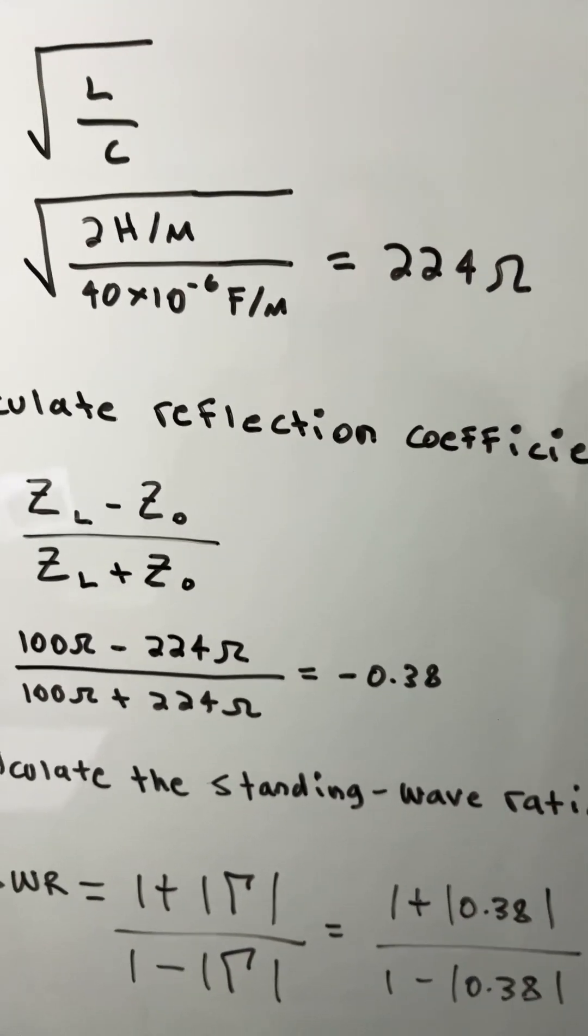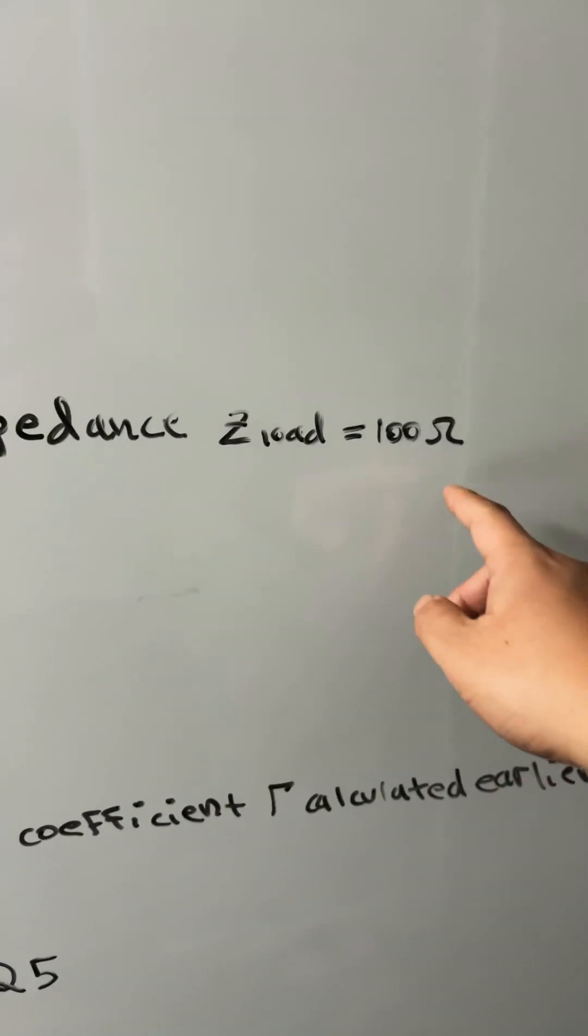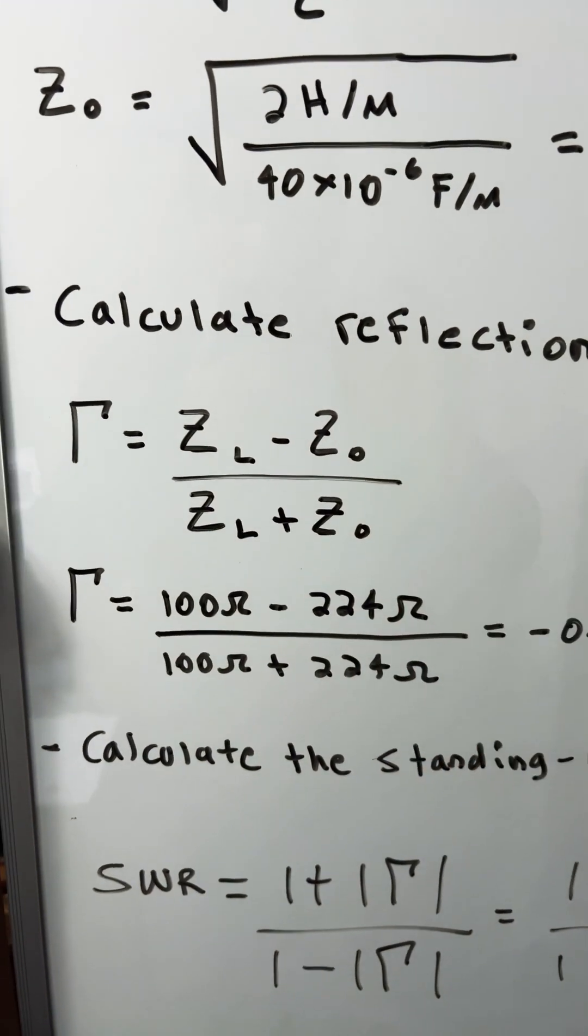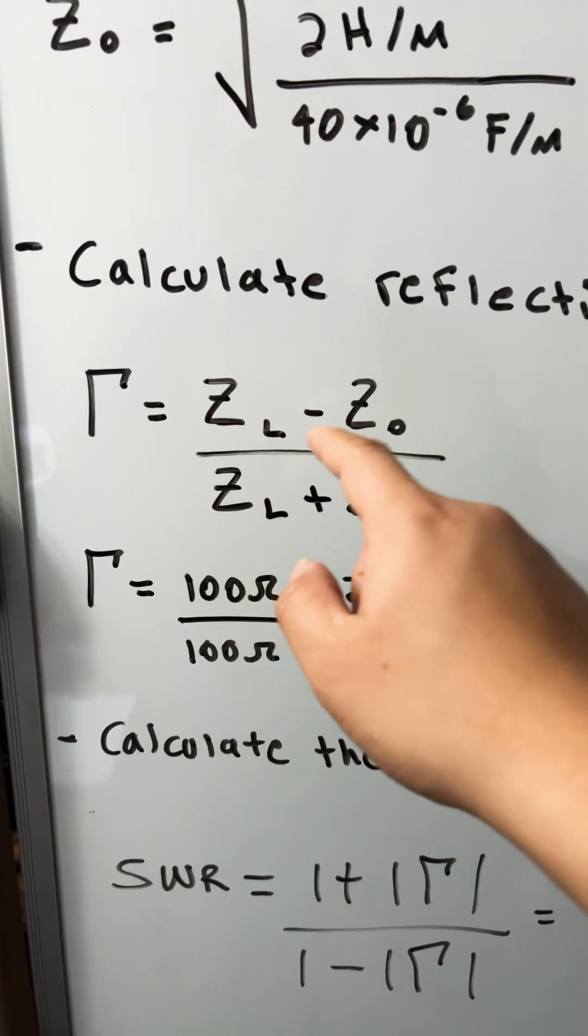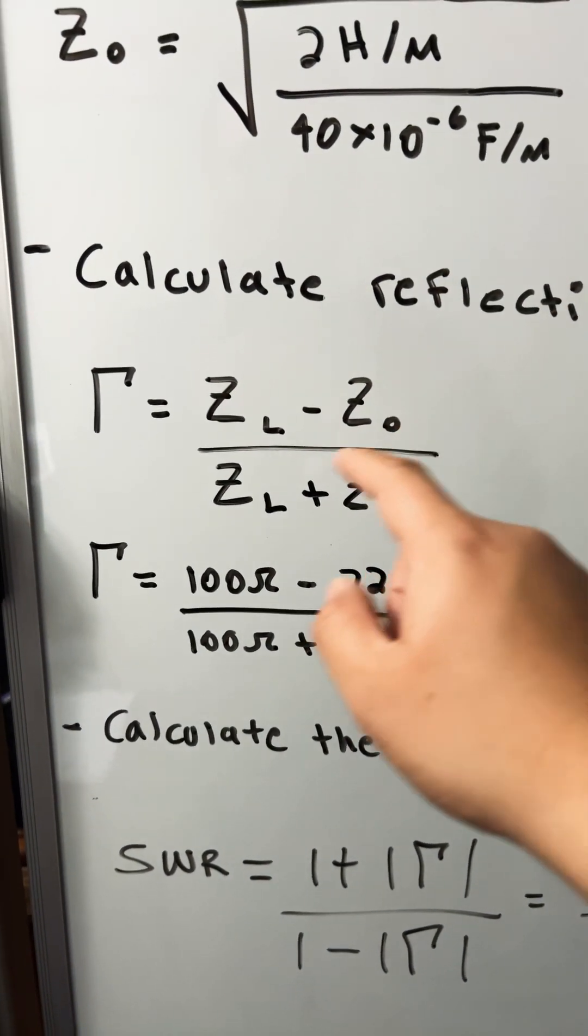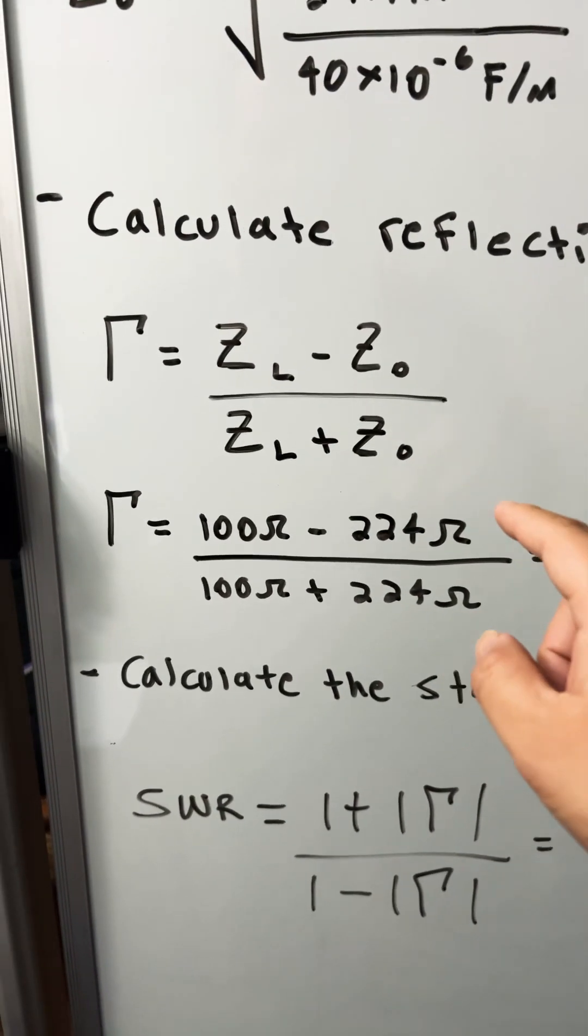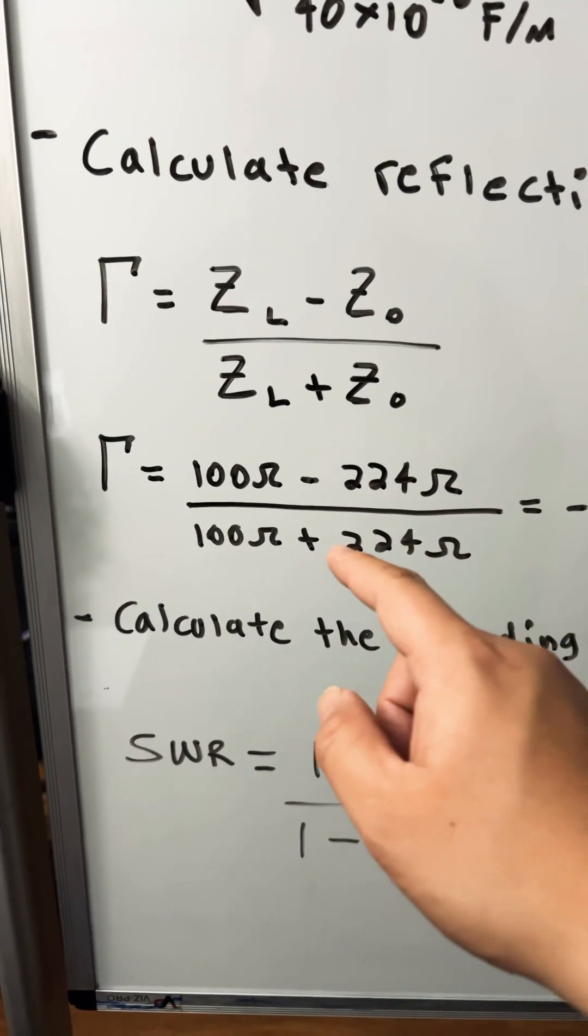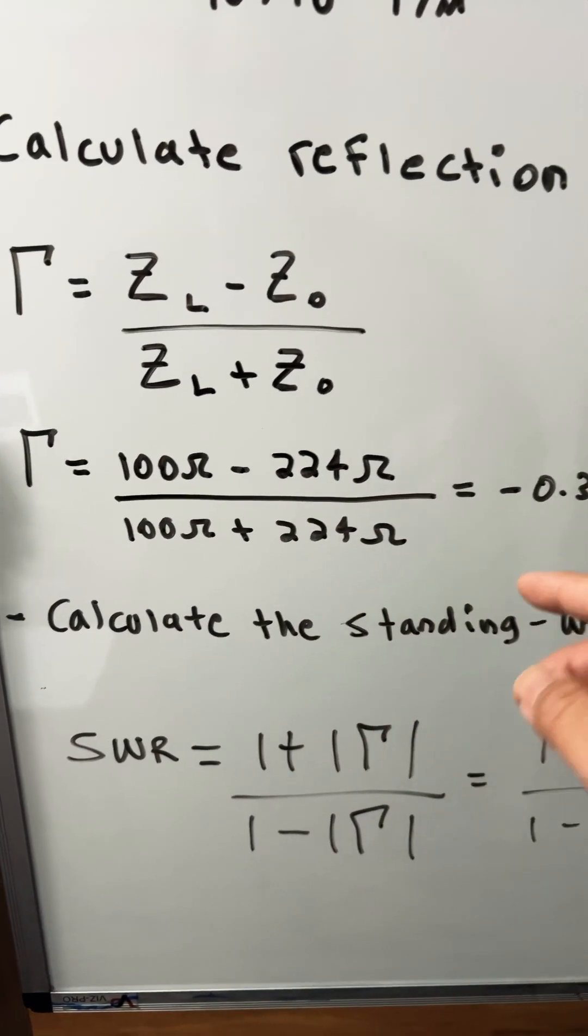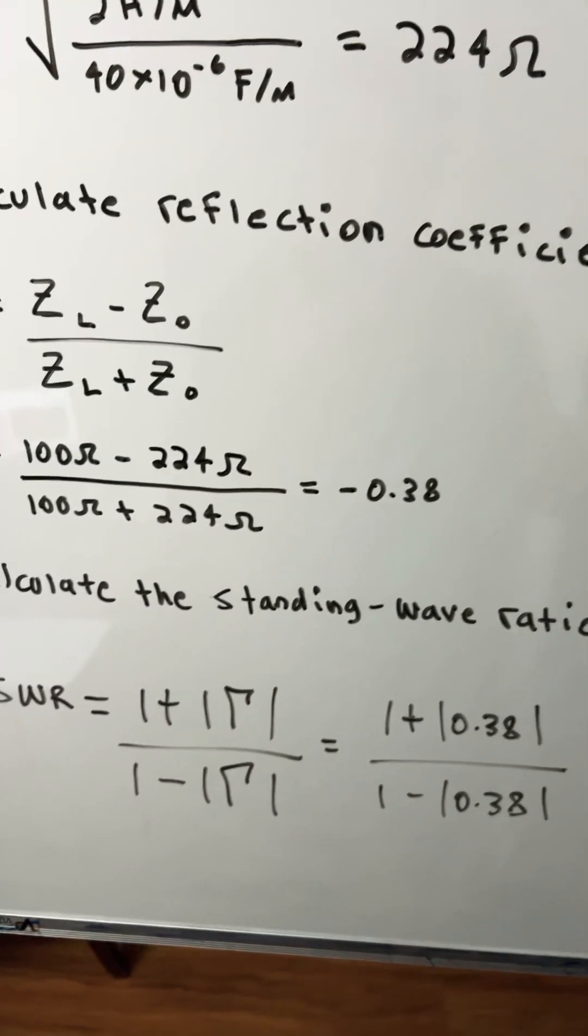Then we will calculate the reflection coefficient if a load impedance is 100 ohms. This is the reflection coefficient equation, so it's load impedance minus characteristic impedance divided by load impedance plus characteristic impedance. We will plug in the numbers: 100 ohms minus 224 divided by 100 ohms plus 224 equals negative 0.38.